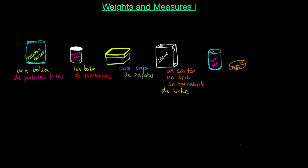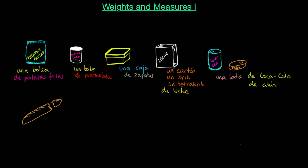Y también tenemos — we also have — una lata. Una lata de Coca-Cola, o una lata de atún — tuna. Notice how in Spanish we don't have a tin and a can, everything is the same: una lata. Also, una barra de pan — a baguette.